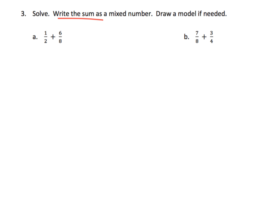Here we're supposed to find the sum, but they keep taking away scaffolding. This time they say draw the model only if needed. Looking at this first problem, we think about which fraction we would put on the number line first. We would start with a half first because halves are larger than eighths. We start by locating on the number line the fraction with the larger unit sizes — halves are larger than eighths, so we'd first draw our halves.